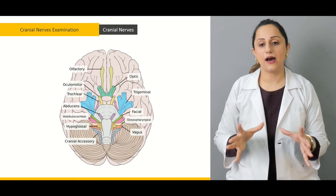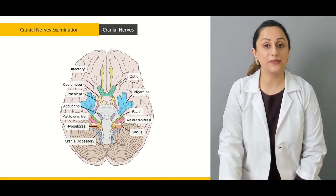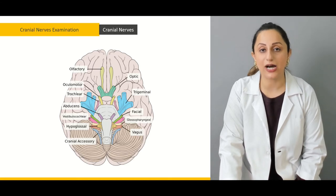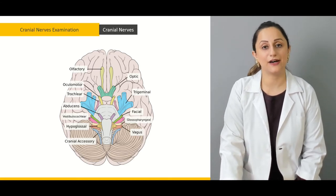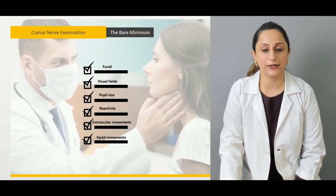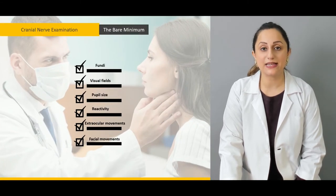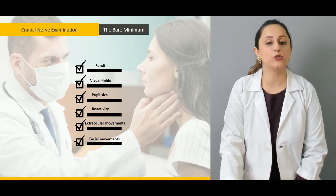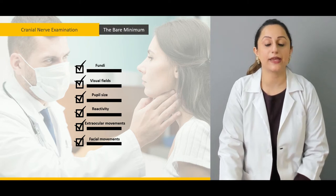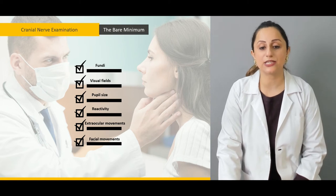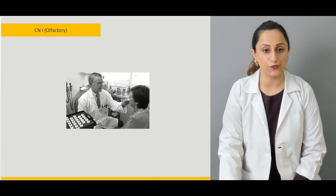One should know how to name these cranial nerves, their basic function, and how to check the integral functionality of each. We'll be discussing the bare minimum checklist, which includes the fundus examination coupled with the visual fields tested for any abnormality, the pupillary size, reactivity, extraocular movements, and facial movements.